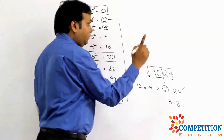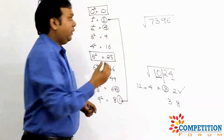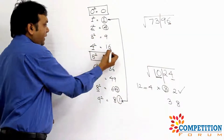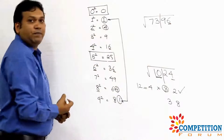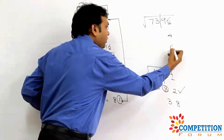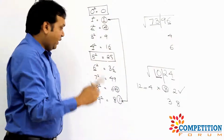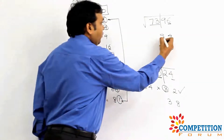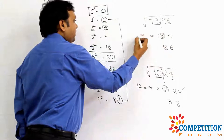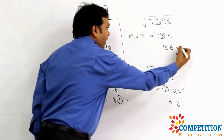Let's find the square root of 7396. The last digit is 6, so the square root ends in 4 or 6. Now look at 73: it's not a perfect square, lying between 8² (64) and 9² (81). We multiply 8 × 9 = 72. Since 73 is more than 72, we take the higher value, 9, giving a first part of 86. So the answer is 86.